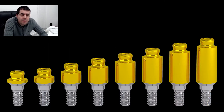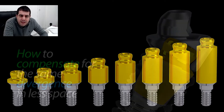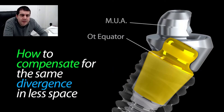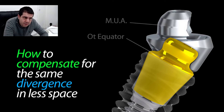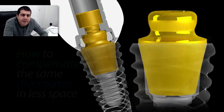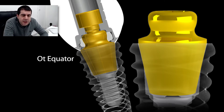Both types of components are available in multiple heights, but MUAs have a larger volume and require a minimal height to work as angulated solutions. The OT equator will keep the same reduced dimensional space regardless of the required angulation to correct unnecessary gingival height.